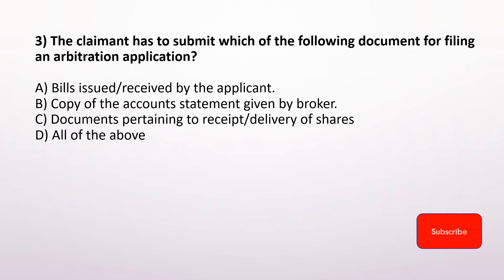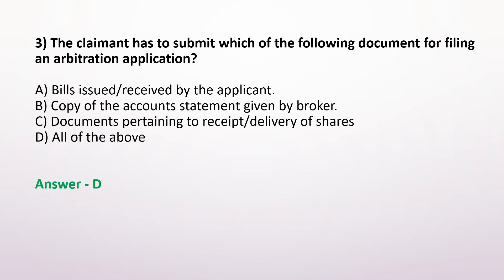The client has to submit which of the following documents for filing an arbitration application? Option A. Bills issued or received by the applicant, Option B. Copy of the account statement given by the broker, Option C. Documents pertaining to receipt or delivery of shares, Option D. All of the above. The correct answer is Option D. All of the above.